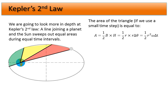We know that the change in angle equals the angular velocity — how fast we're going around this circular orbit — times the change in time, which is a small time interval. This equation works out to be one half r squared, and then we get omega times delta t, which equals our area over delta t.